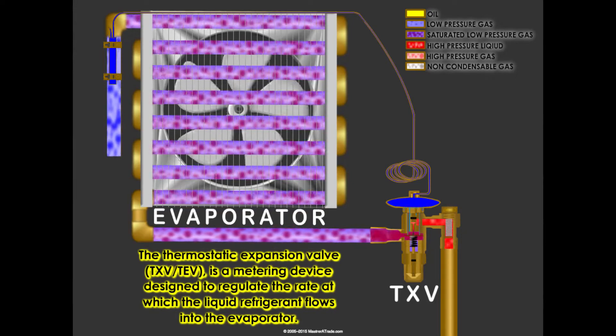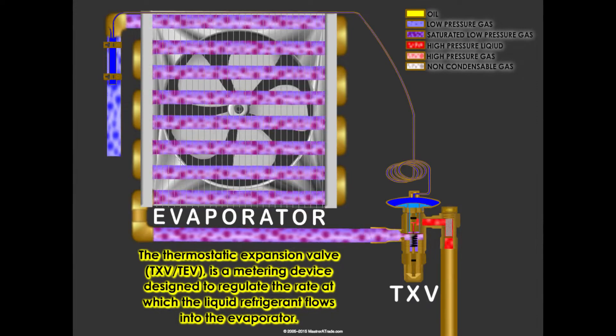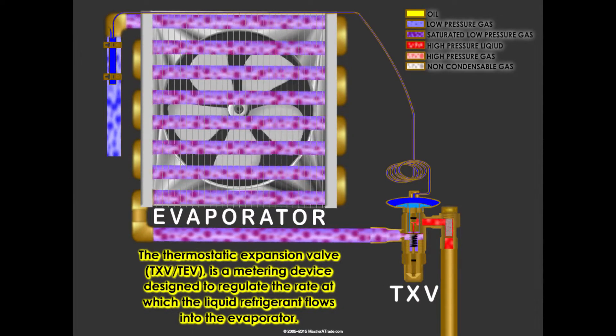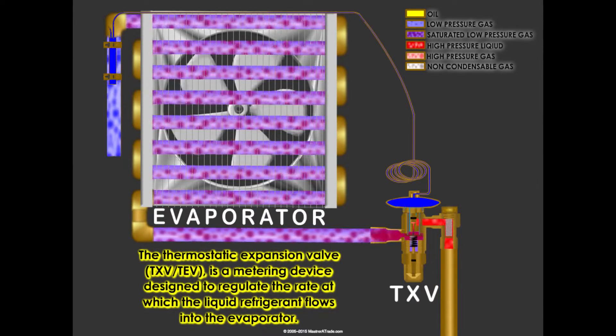The thermostatic expansion valve, TXV or TEV, is a metering device designed to regulate the rate at which liquid refrigerant flows into the evaporator.